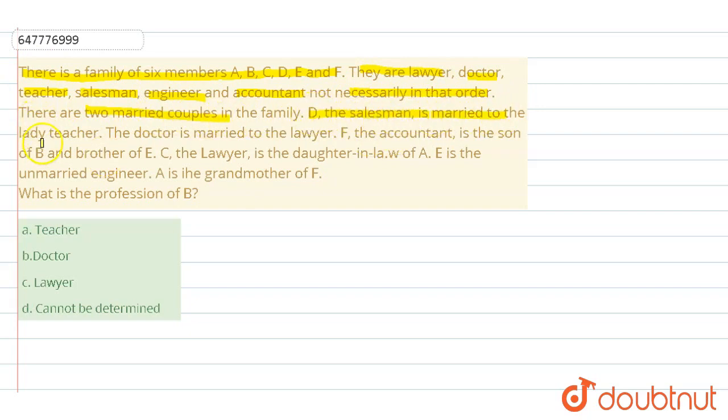And married to the lady teacher. So, D is salesman and teacher, lady, this is salesman. And also, this is lady teacher. So, this is lady teacher. And next sentence, next sentence, the doctor.